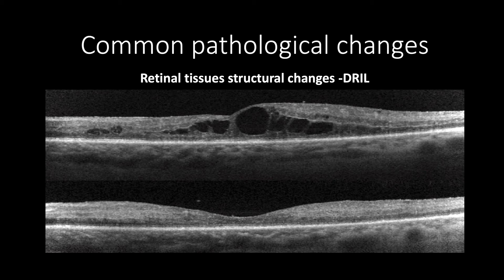Therefore, when a patient has long-term inner retinal tissue structure changes such as cystoid macular edema, the patient will suffer some degree of visual impairment due to the disorganization of the inner retinal layers. This is an example of central diabetic macular edema presented with intra-retinal cysts disrupting the boundaries between the inner retinal layers.